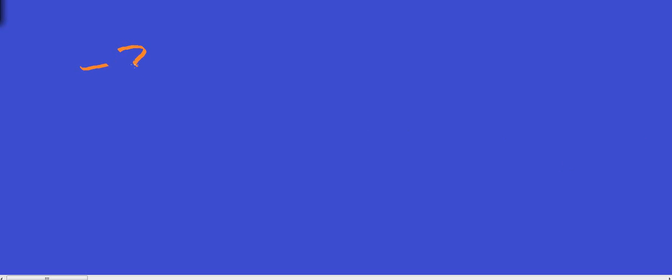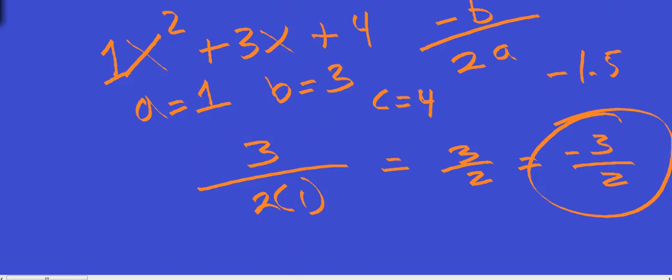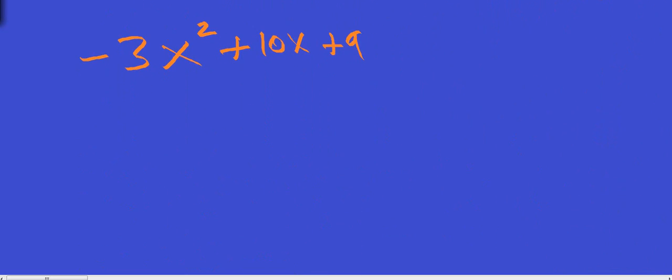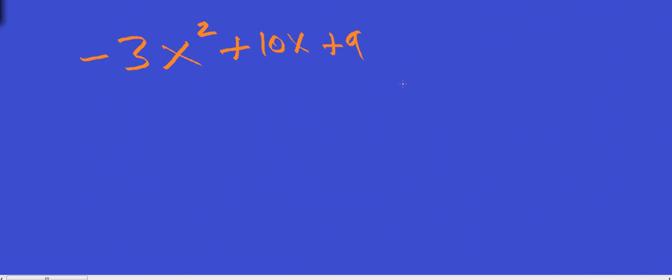You've got negative 3x squared plus 10x plus 9. So you've got negative 3x squared plus 10x plus 9. You're going to do your negative b over 2a. That equals x. x is going to be our axis of symmetry. It's that vertical line that's going to cut this parabola in half.